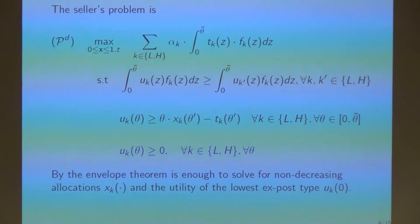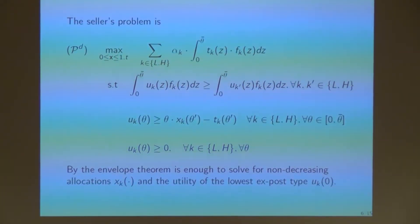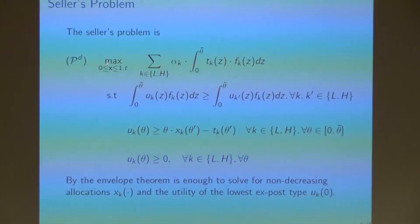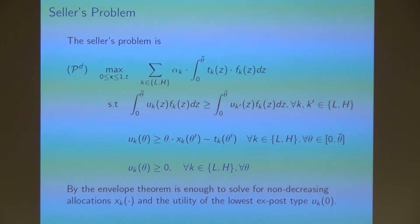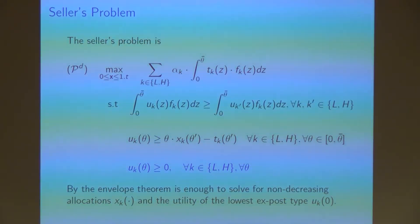Given the primitives and timeline, the seller wants to find the optimal allocation and transfer that maximizes the expected payment received from the contract, subject to three constraints. The first set are the ex-ante incentive compatibility constraints, which say the buyer must reveal her type truthfully. Then we have the exposed incentive compatibility constraints, which say the buyer must reveal her valuation truthfully. Finally, the exposed individual rationality constraint says that for every type k and every valuation θ, the buyer must have a non-negative net utility.